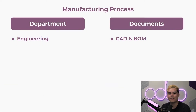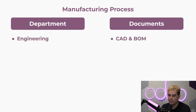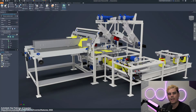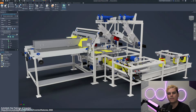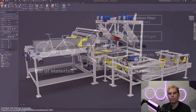In the typical manufacturing process, the first step is for the engineers to design the product. They usually work with some type of computer-assisted design software, otherwise known as CAD, such as AutoCAD or SolidWorks. Once the engineers design the product in CAD, they can then create a Bill of Materials, or BOM for short.